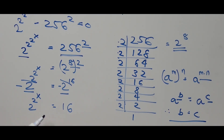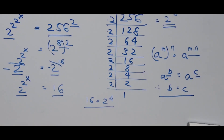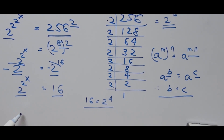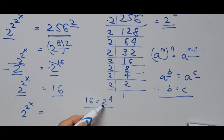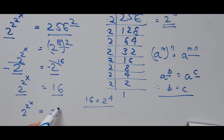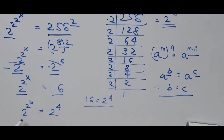Again we need a common base. We recognize that 16 can be written as 2 to the power of 4, so we substitute that. The equation becomes 2 to the power of x equals 2 to the power of 4. Since the bases are the same, we equate the exponents: 2^x equals 4.